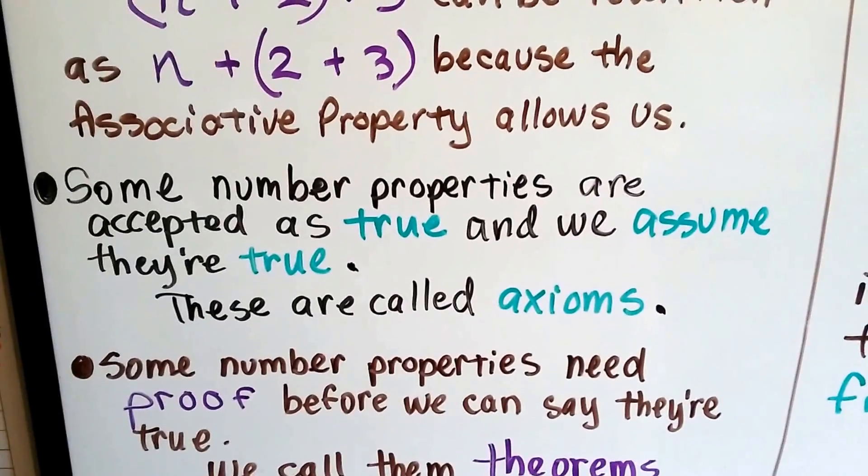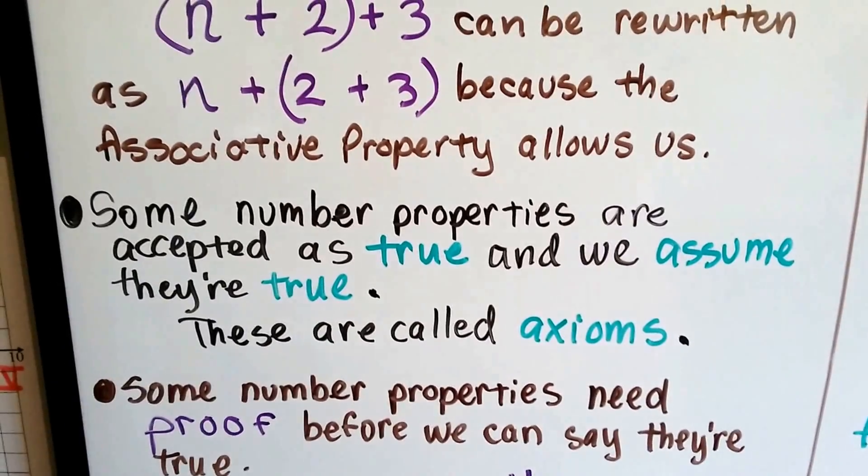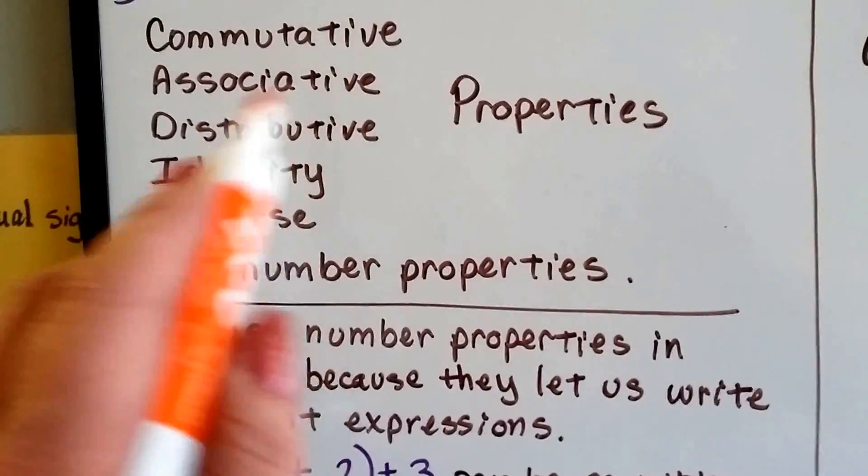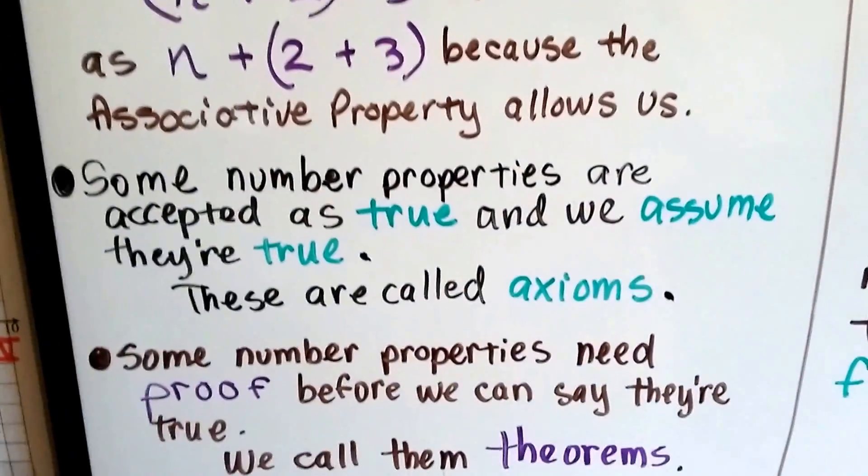Well, some number properties are accepted as true and we assume they're true. These are called axioms. So yeah, we can call these axioms. That's what an axiom is when it's true.